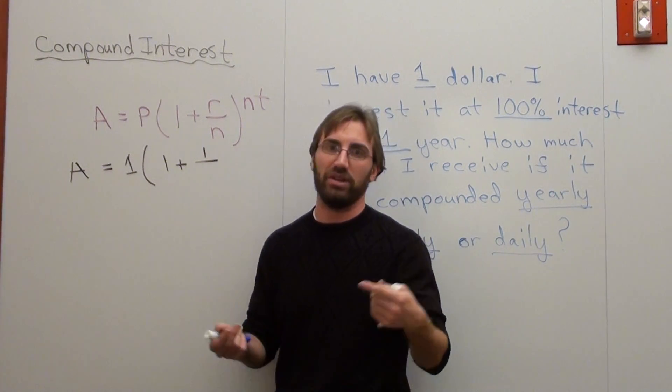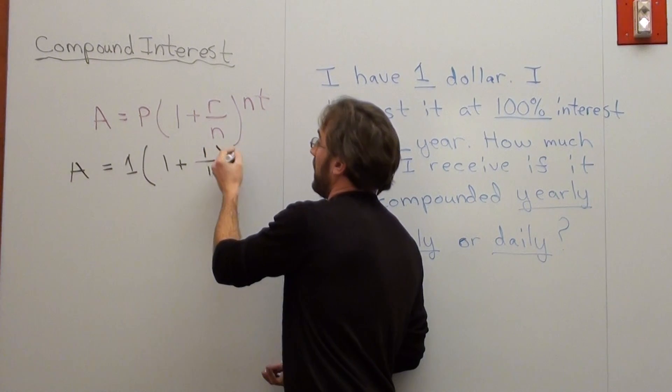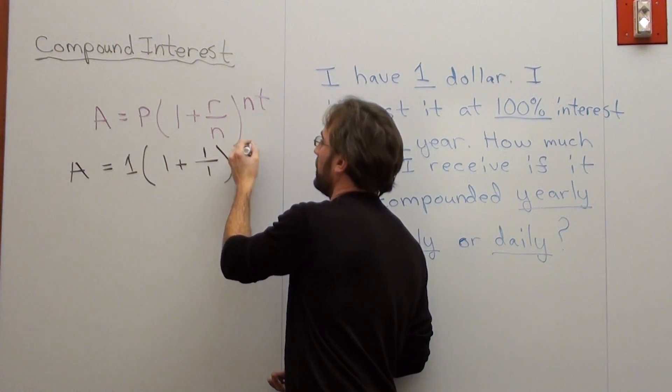You know, I compounded every year and I only kept it in the bank for a year. So my n is 1. My n is still 1. And my t stands for 1 year. And there you go.